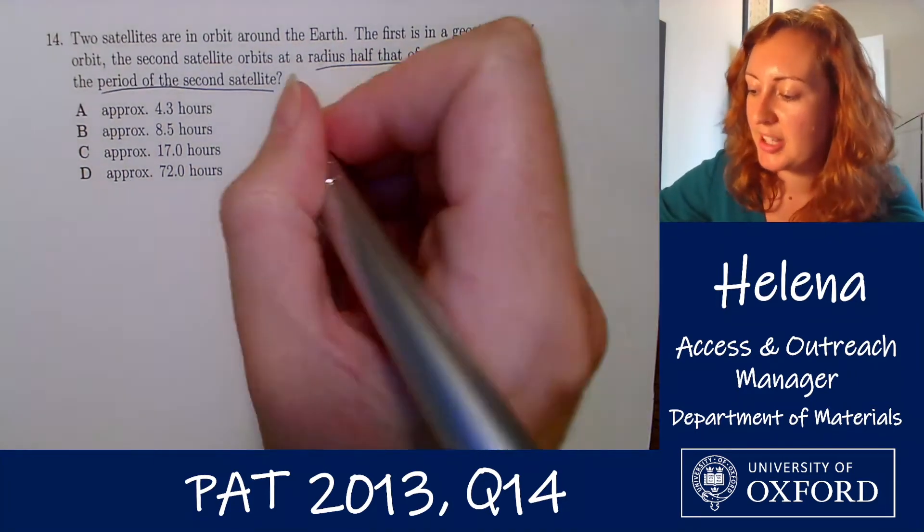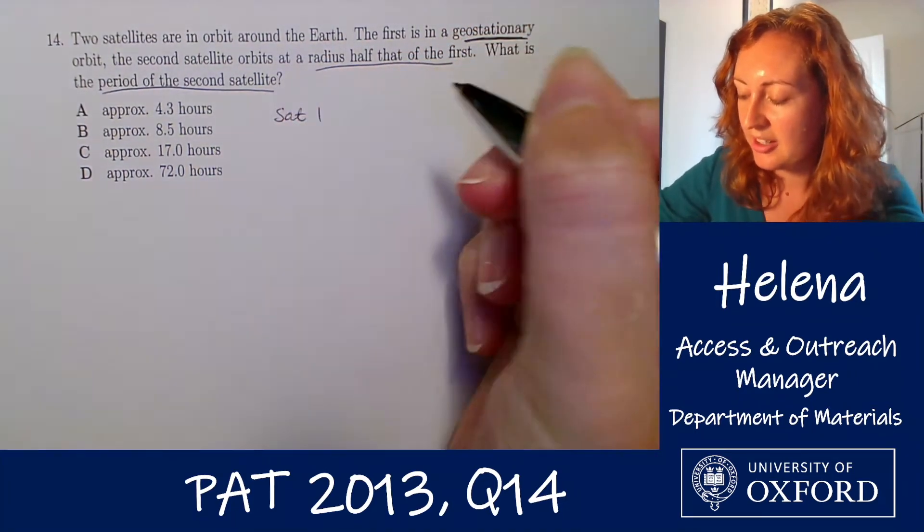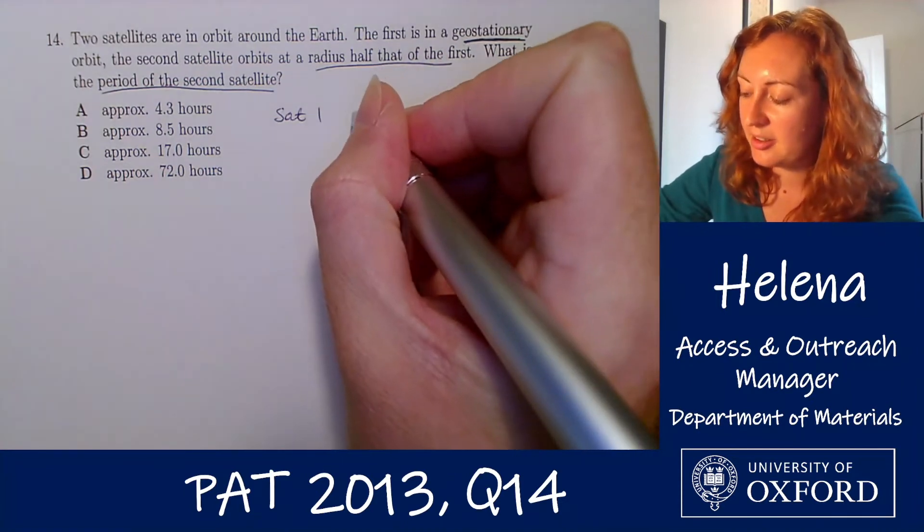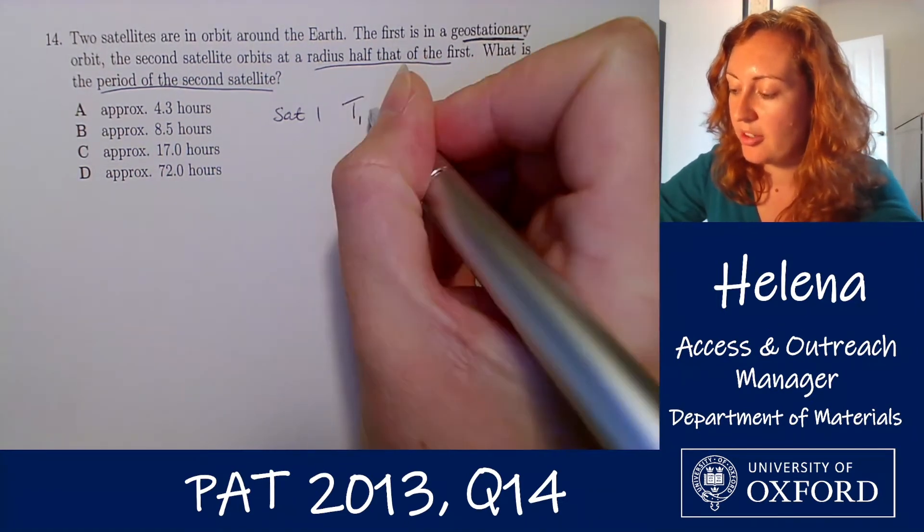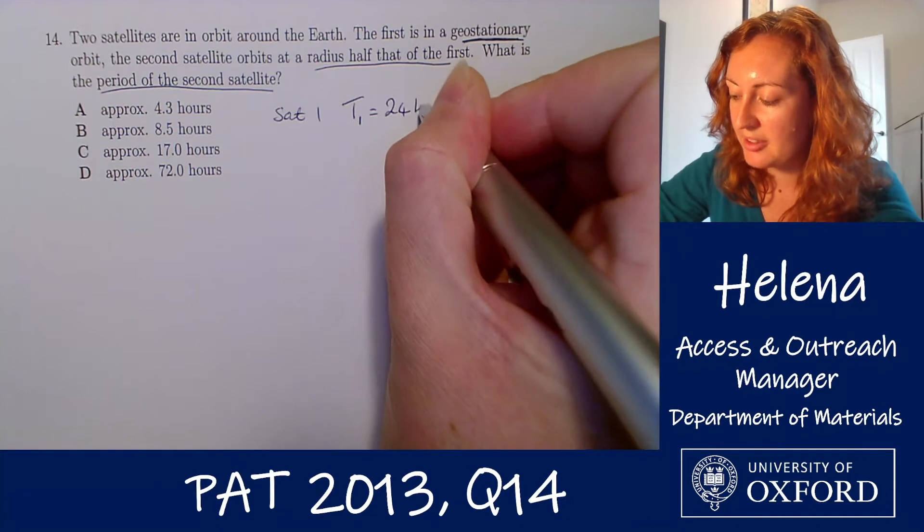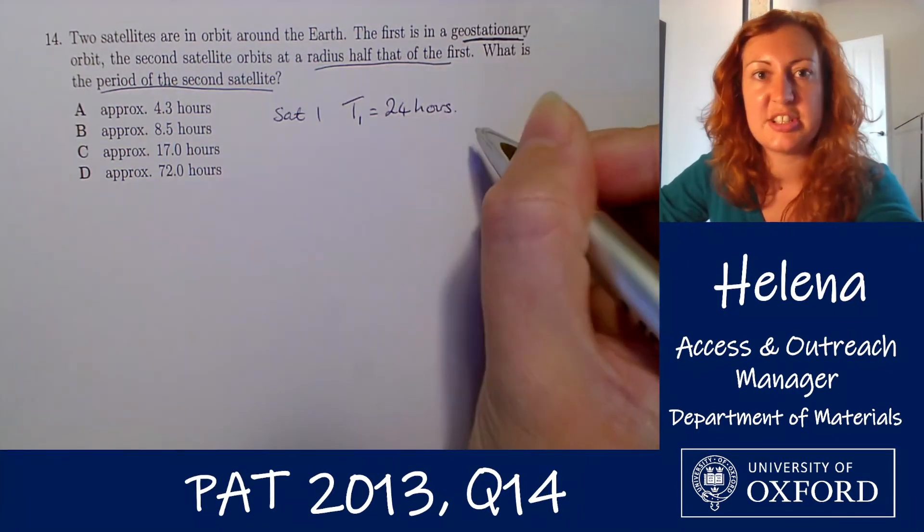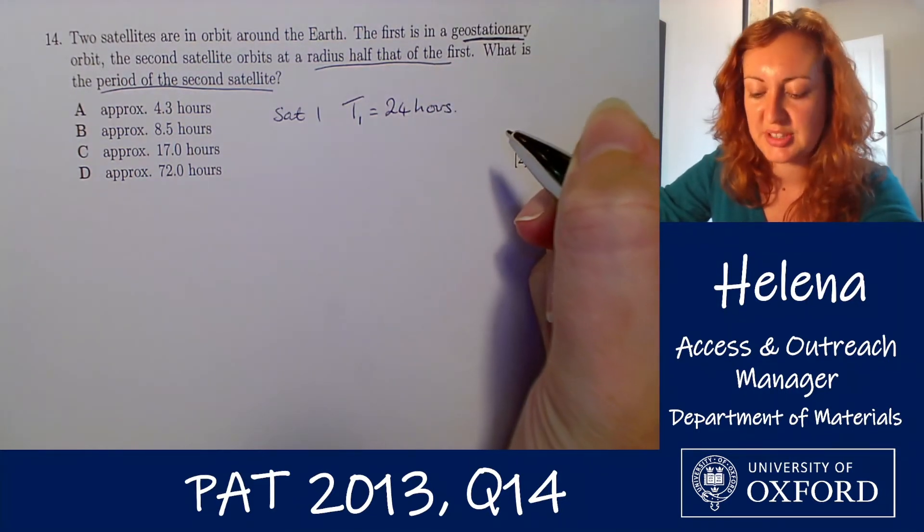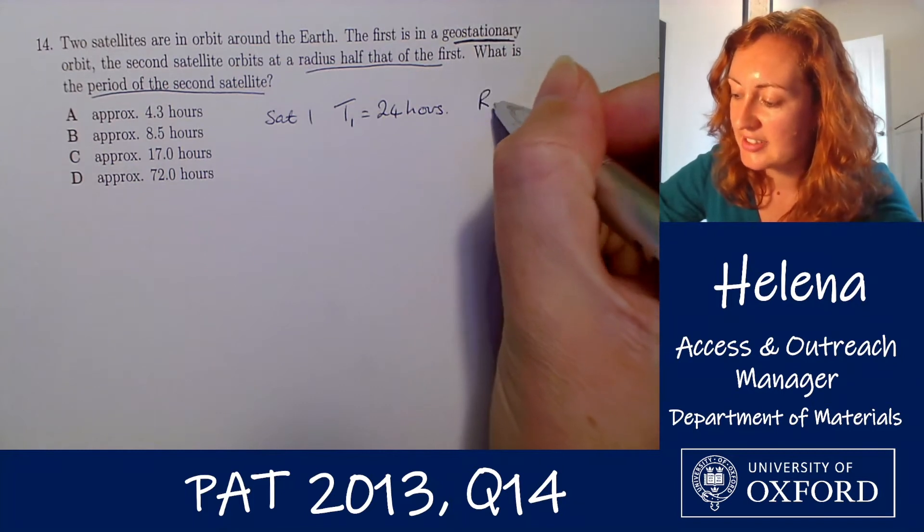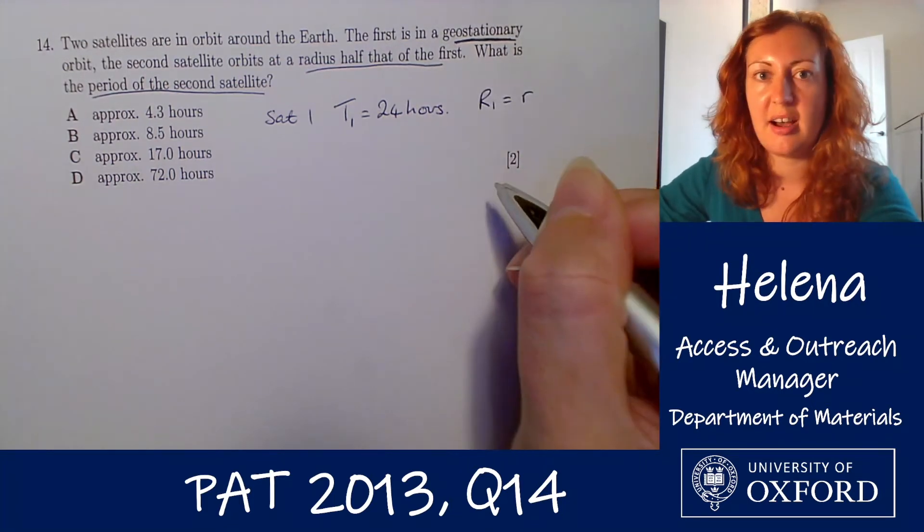Right so let's set up the problem here. So we have satellite number one which has a period t1 of 24 hours because we're told it's in geostationary orbit which means its period is 24 hours and let's say it has a radius r1 of little r here.